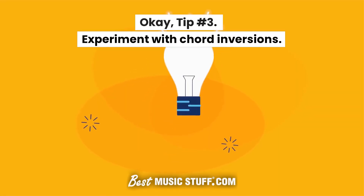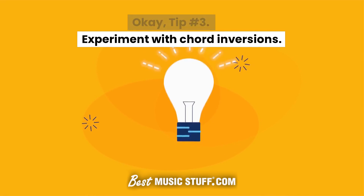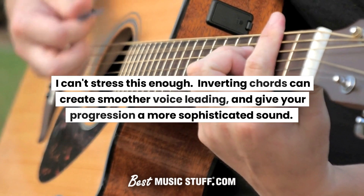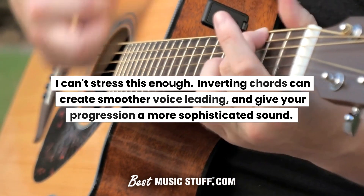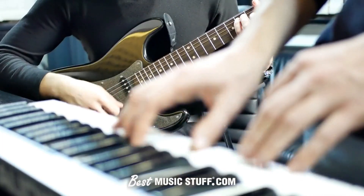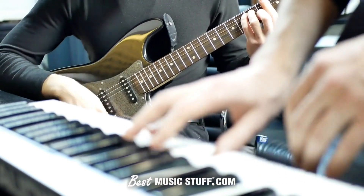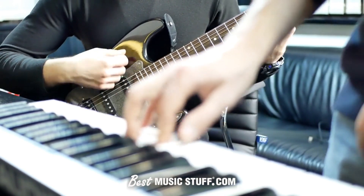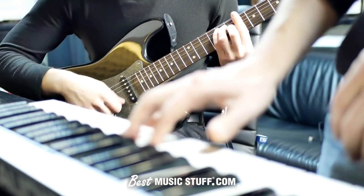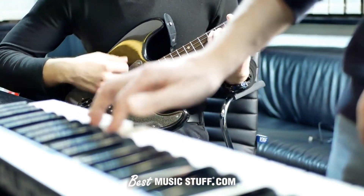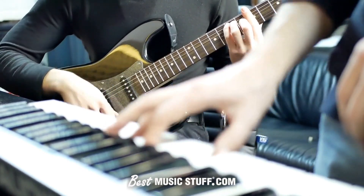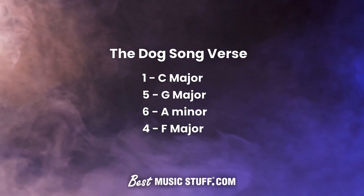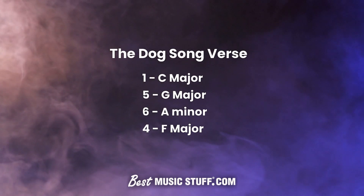Tip number 3: Experiment with chord inversions. Inverting chords can create smoother voice leading and give your progression a more sophisticated sound. By rearranging the notes in a chord so that the root is no longer the lowest note, you create inversions that can help you make nicer transitions between chords or emphasize different harmonies. You might even start sounding a little jazzy.